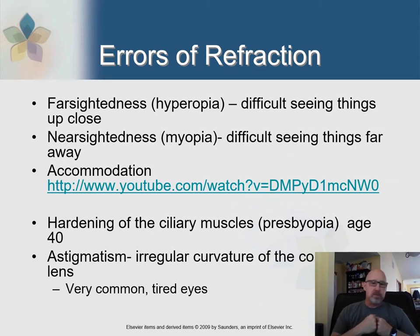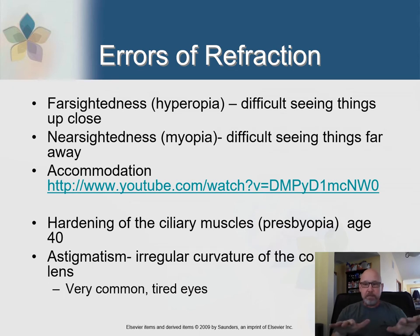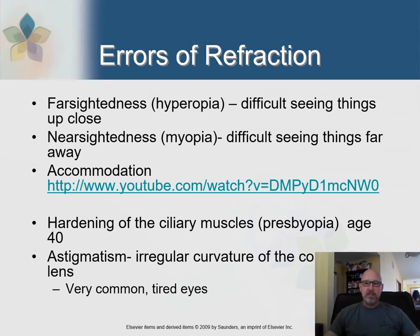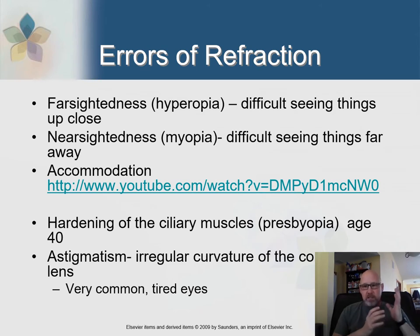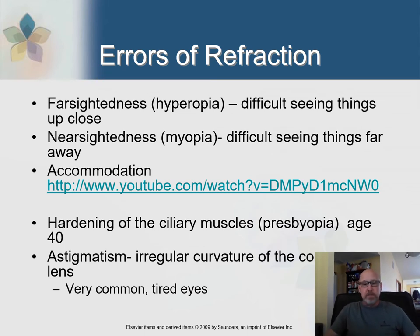Astigmatism is an irregular curvature of the cornea itself. Because the cornea is irregular, that will warp the visual field and cause visual disturbances. You can see more astigmatism as you grow older as well.